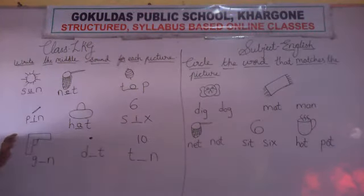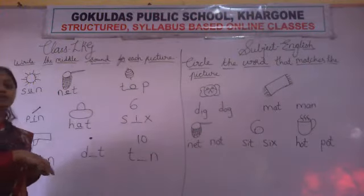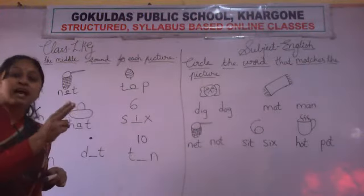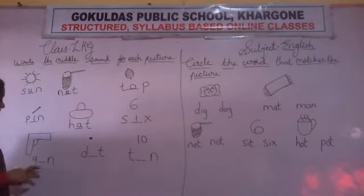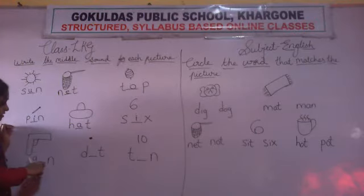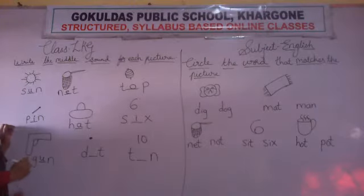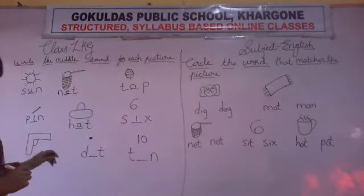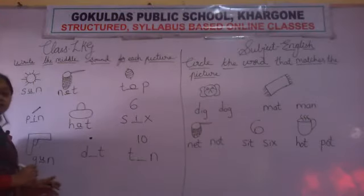Now look at the next picture. This is a picture of gun. G-U-N. Gun. So which letter will come here? U. The sound of U. G-U-N. Gun.